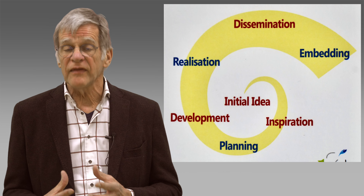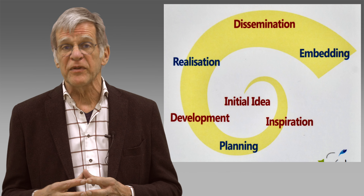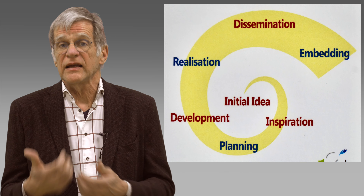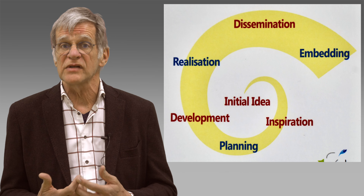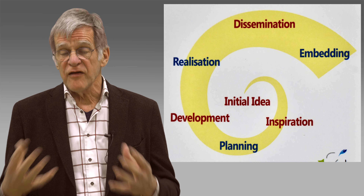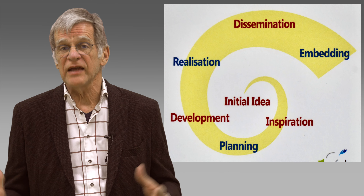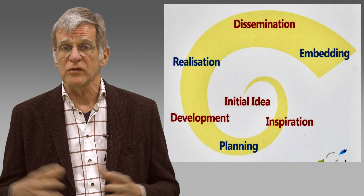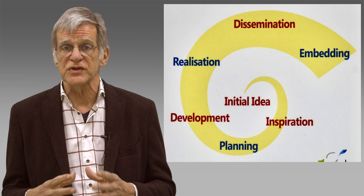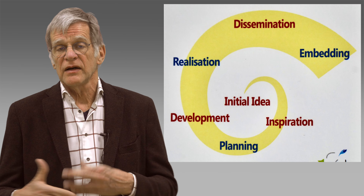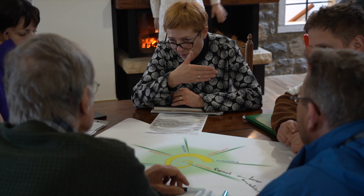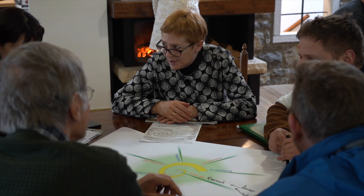When it works out well, there will be other people who are really interested and take it over — that's the dissemination stage. And if many people take it over, you will see that the structure and the people responsible for it adapt to it. You get different rules and regulations. That's what we call the embedding stage.